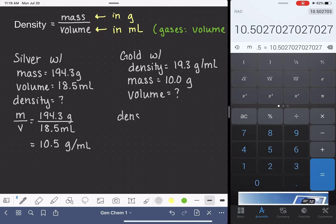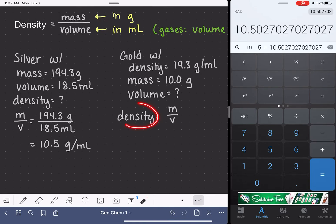So there's a couple ways that we could approach setting up this problem. We could go back to our density equation. Density equals mass over volume. And we could say, well, we know the density. We know the mass. Our volume is our unknown.